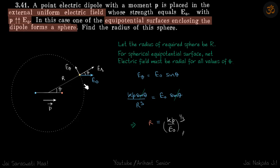Let's say this is the equipotential surface which is in the form of a sphere, and we need to find the radius of this sphere. For an equipotential surface, the electric field must be perpendicular to it at all points.